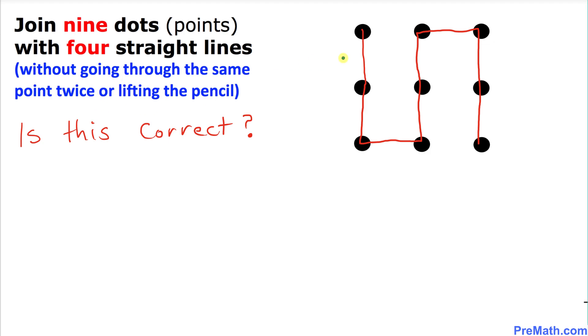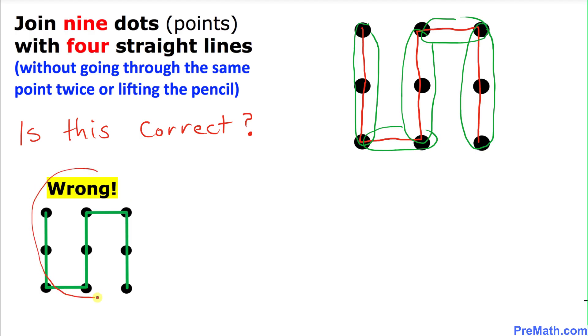Let's examine this one. First of all, we connected all these points and we did not lift our pencil. However, we are supposed to have four straight lines. Let's count our straight lines: first one, second one, third one, fourth, and fifth. So we exceeded - we must use only four straight lines. That means this strategy is not correct. Thus, our first strategy did not work out.